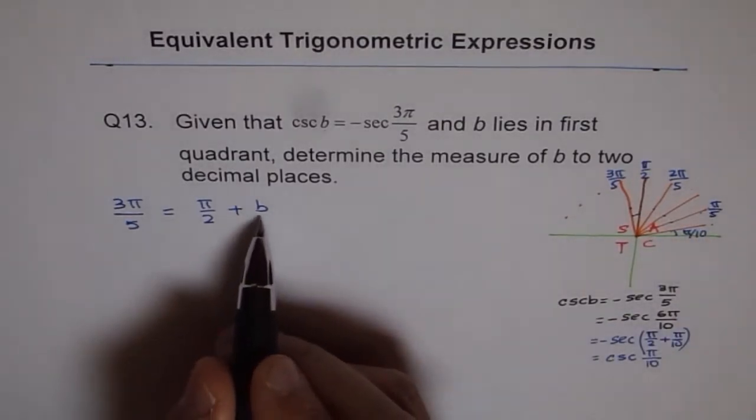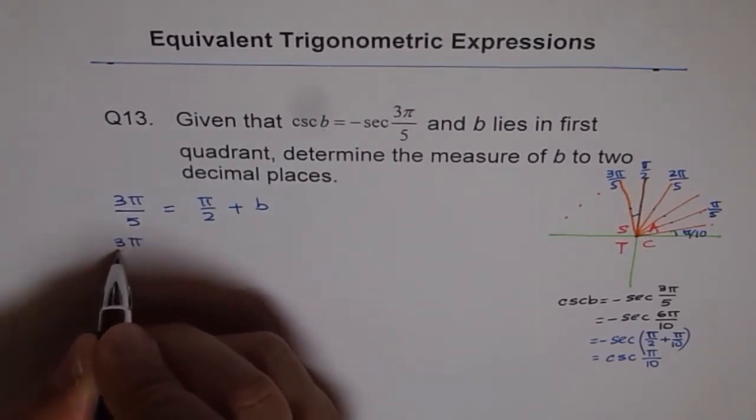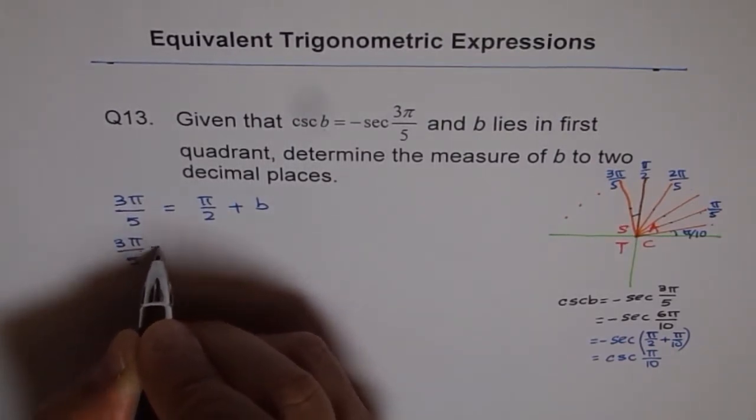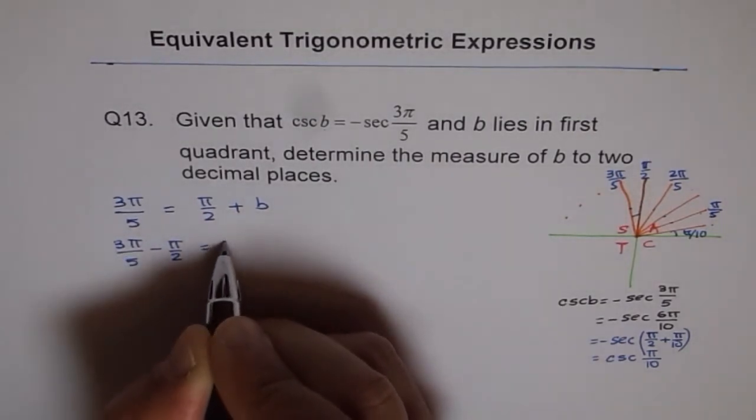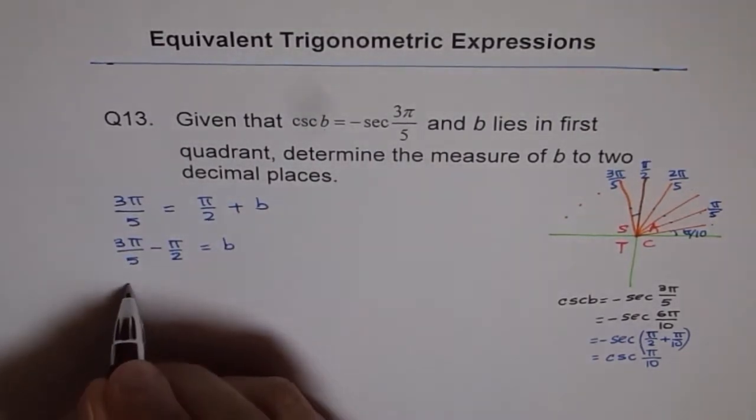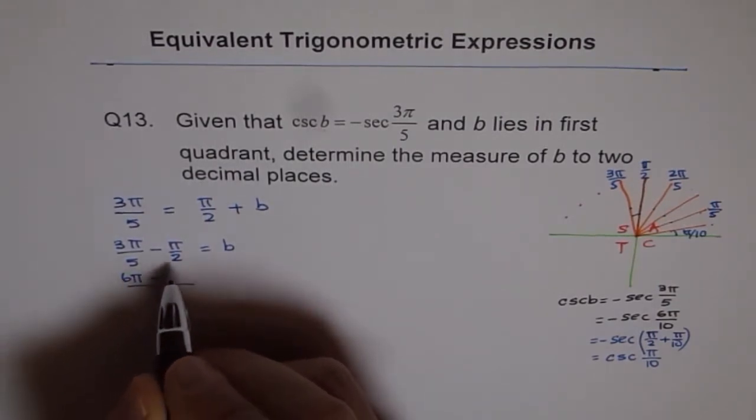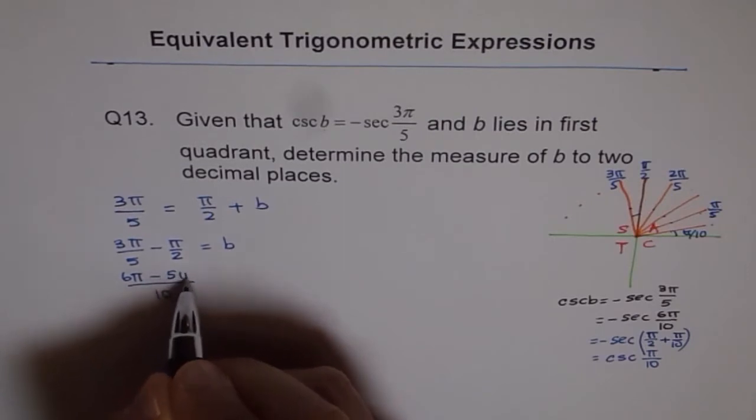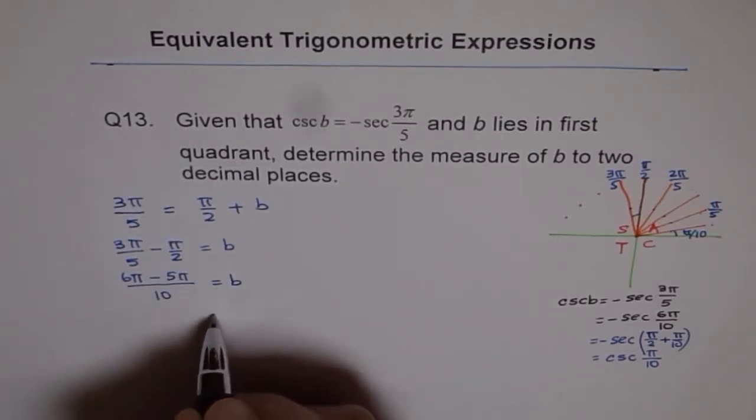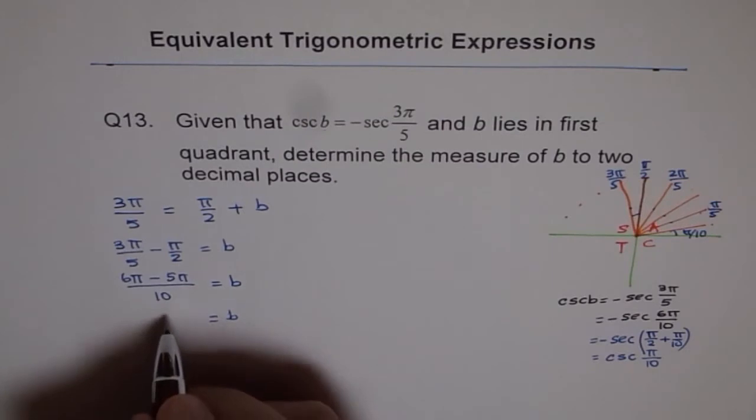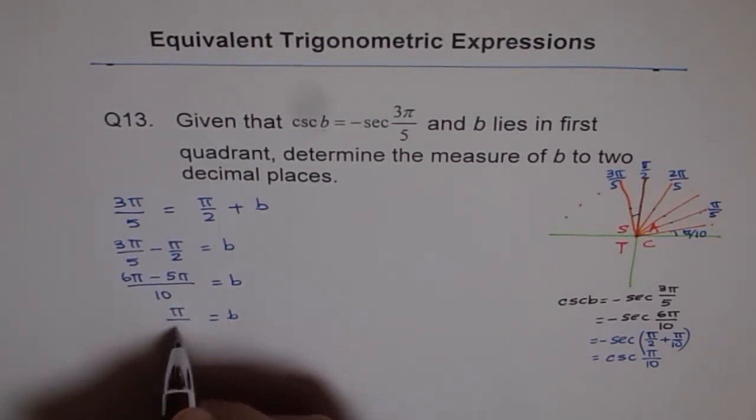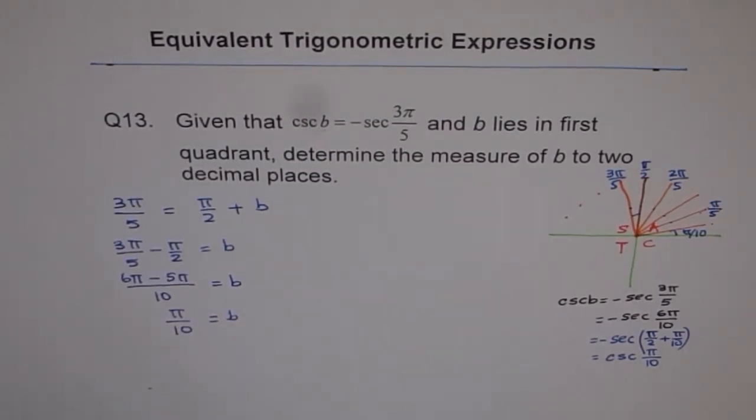Now from here we can rearrange and we can say, 3π/5 minus π/2 equals B. We can take common denominator of 10 and we get 6π minus 5π equals B. And then we get B equals 6 minus 5 is 1. We get π/10. Do you see? We get the same angle. That is how you could do algebraically.